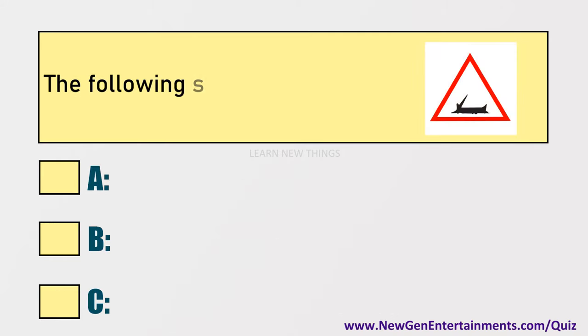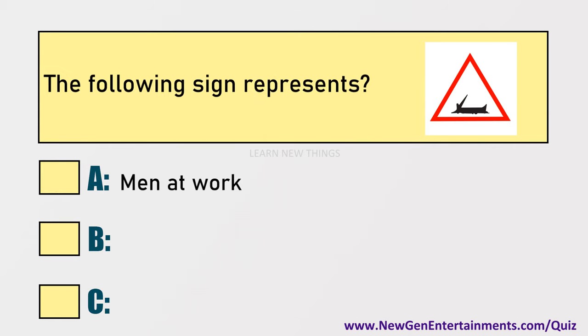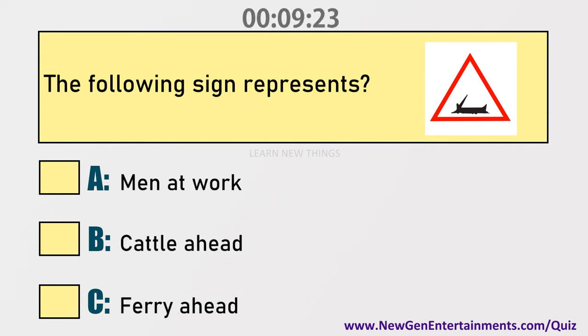The following sign represents: Options are: A) Men at work, B) Cattle ahead, C) Ferry ahead.